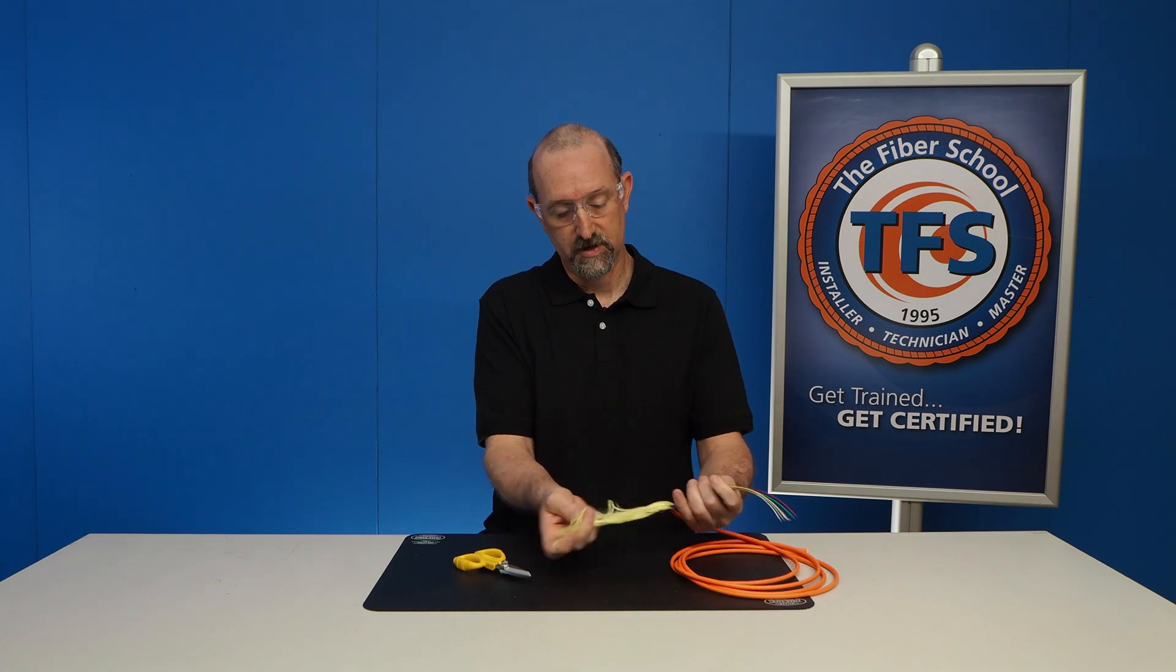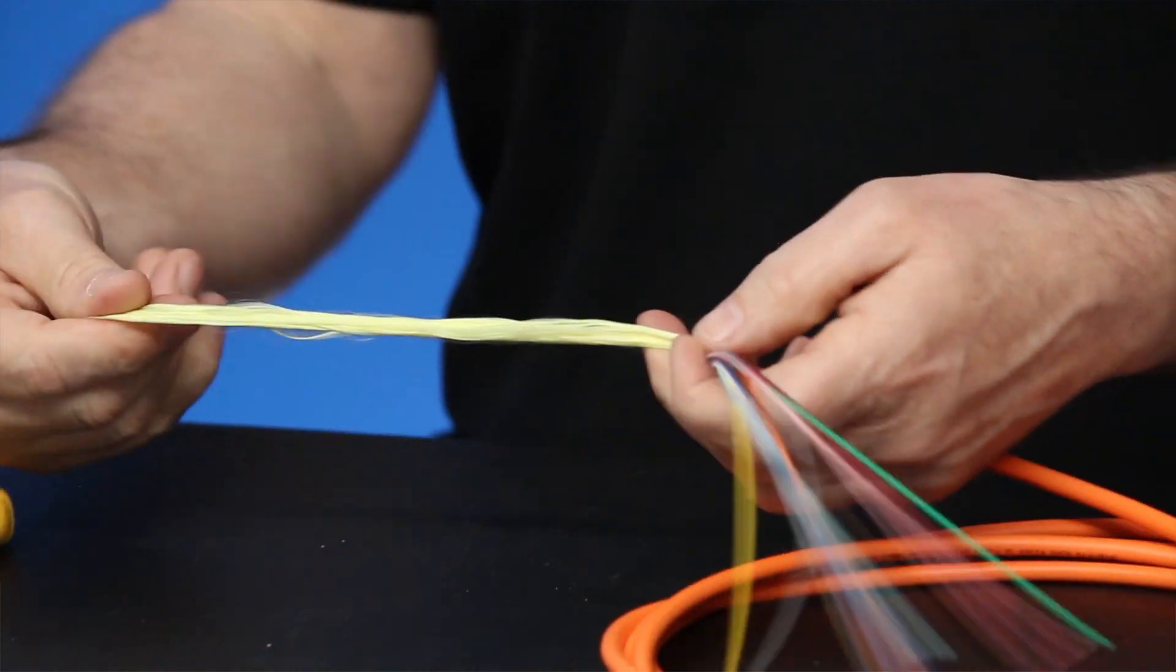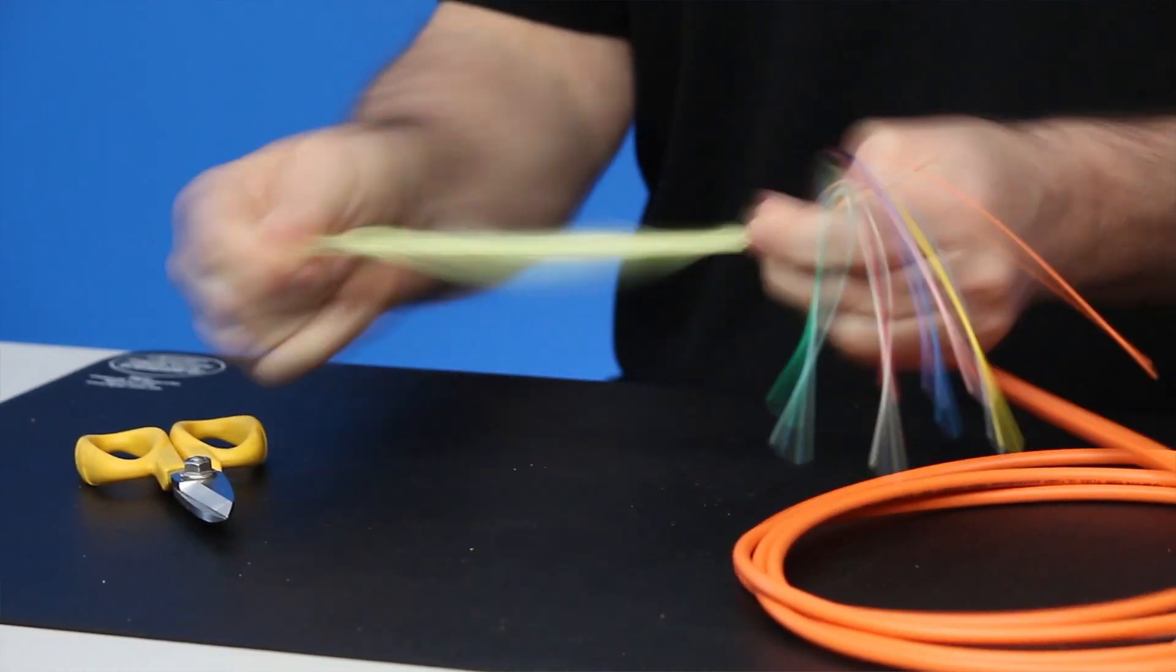I'll show you what you do after you've gotten to the jacket here. You've cut the outside jacket off, and you have your Aramids, which are very strong. You can see that.